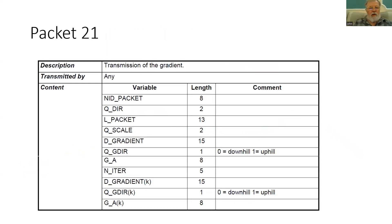All of that is transmitted in a packet, and in ETCS that is Packet 21. Packet 21 allows for one gradient - either uphill or downhill - and then a number of further gradient segments, again up or down with a gradient, and the length of each can be determined.